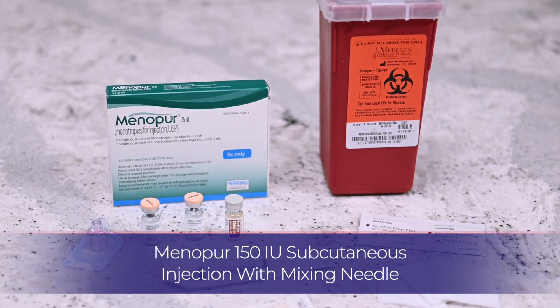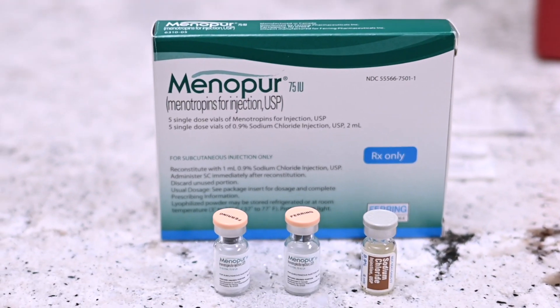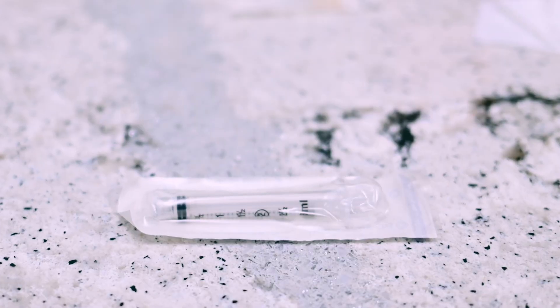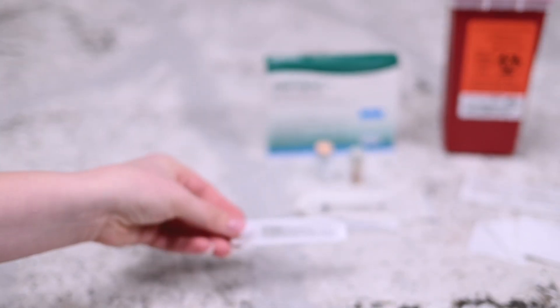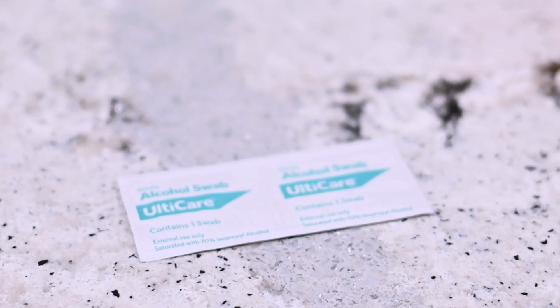You will need the following: two vials of Menopur powder, one vial of sterile diluent, syringe with 22 gauge one and a half inch mixing needle, 27 gauge half inch needle, alcohol prep wipes, gauze, and a sharps container.